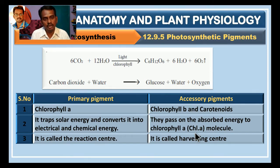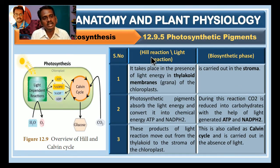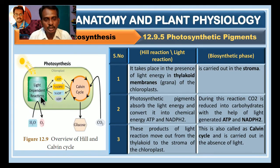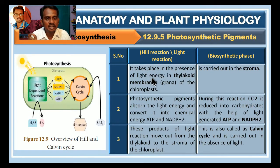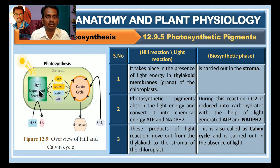The difference between primary and accessory pigment may be an exam question, so study this part thoroughly. The photosynthetic reaction and the difference between primary pigment and accessory pigment are very important for your board exam. There are two types of reactions that take place in the plant: one is the Hill reaction, also called light reaction, and the other is the dark reaction. The light reaction is called the Hill reaction because of the name of the scientist. It takes place in the presence of light, in the chlorophyll membrane.